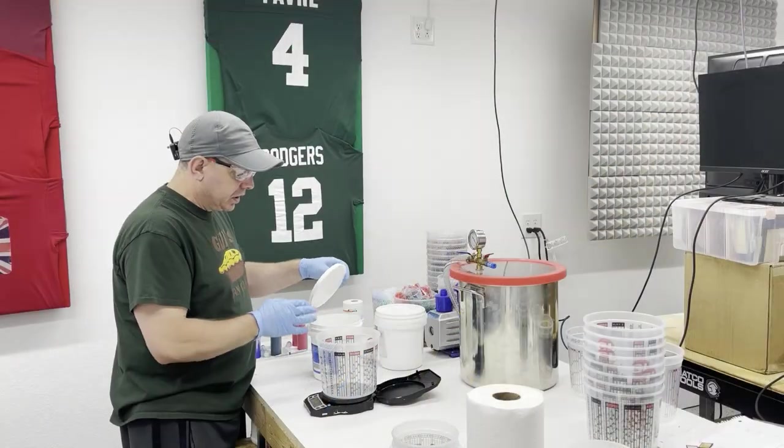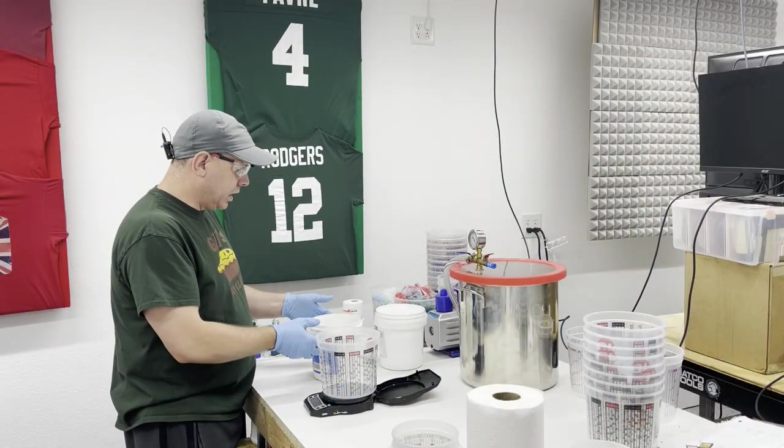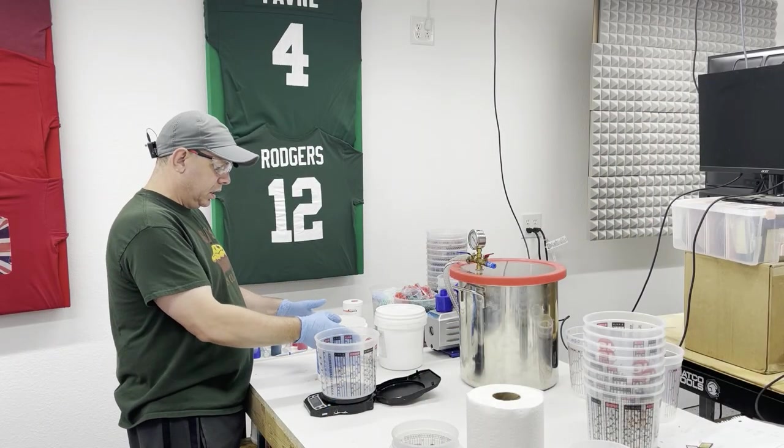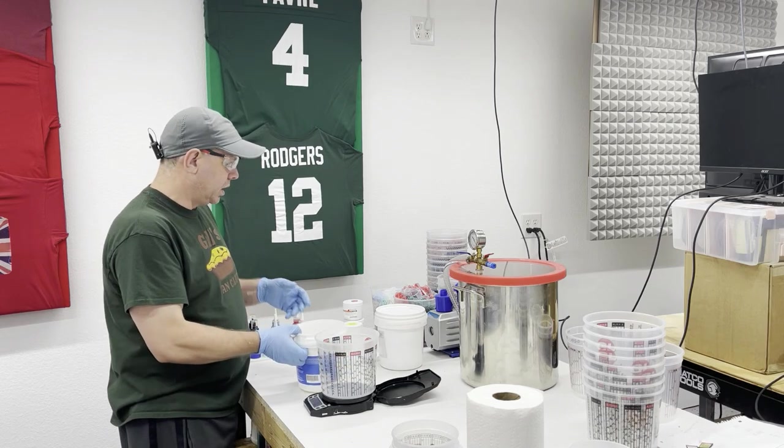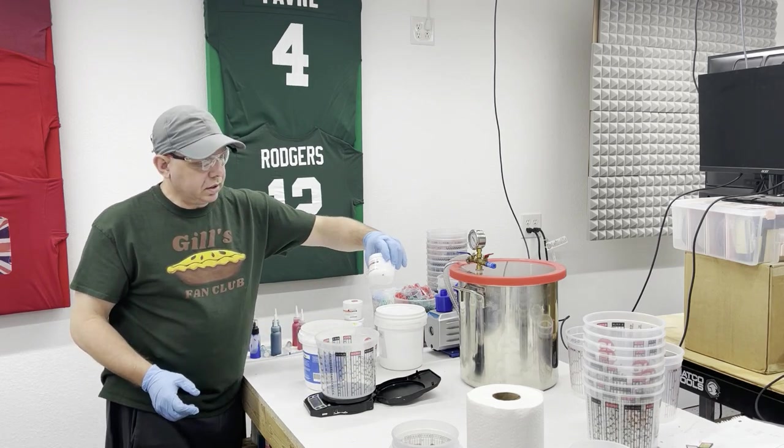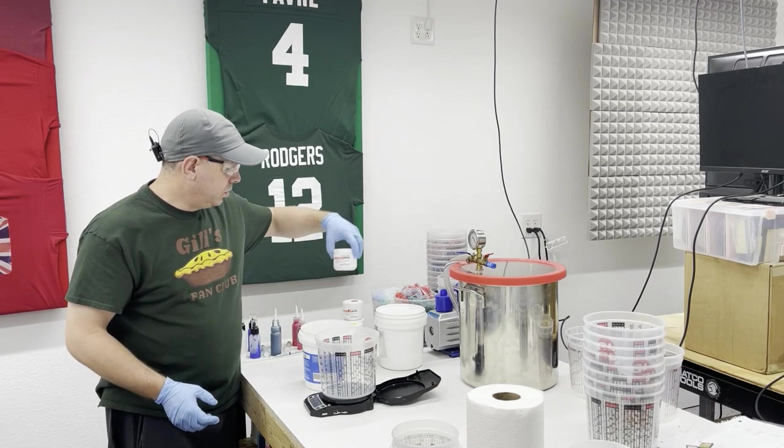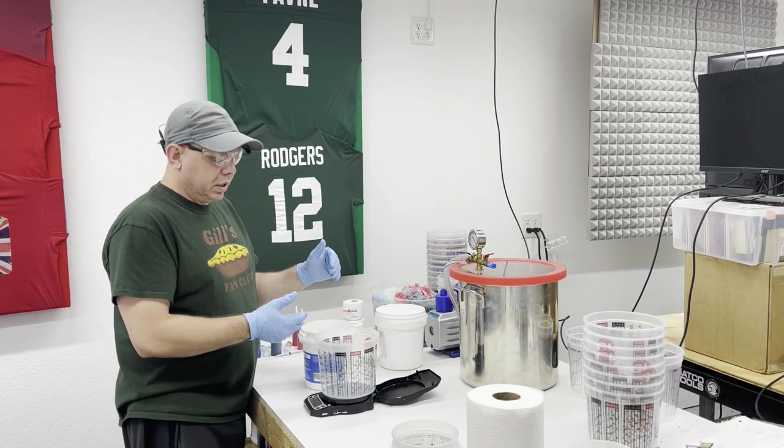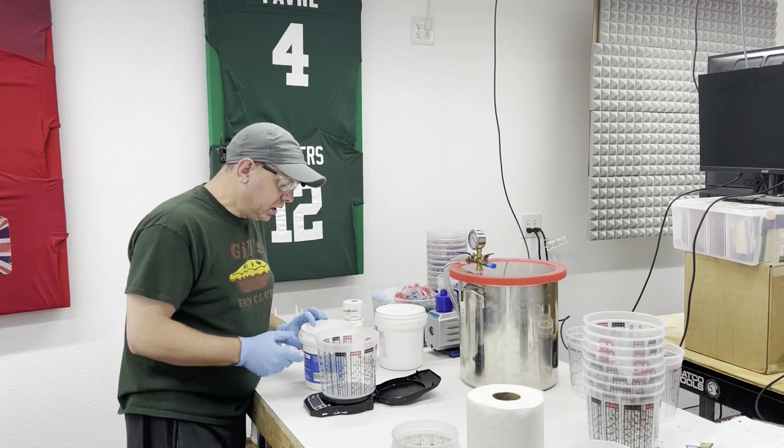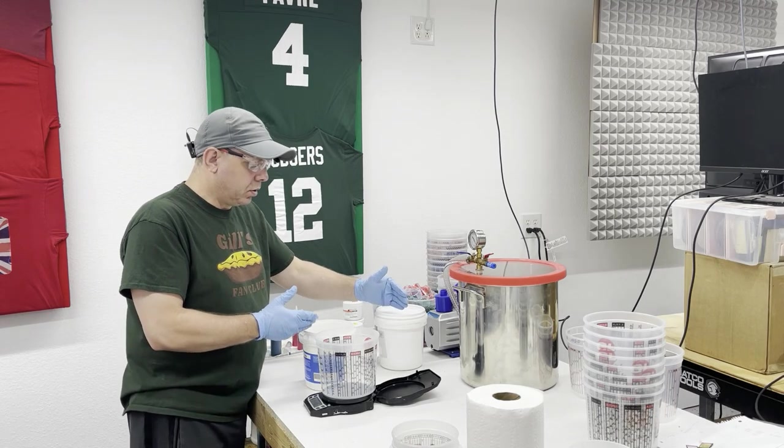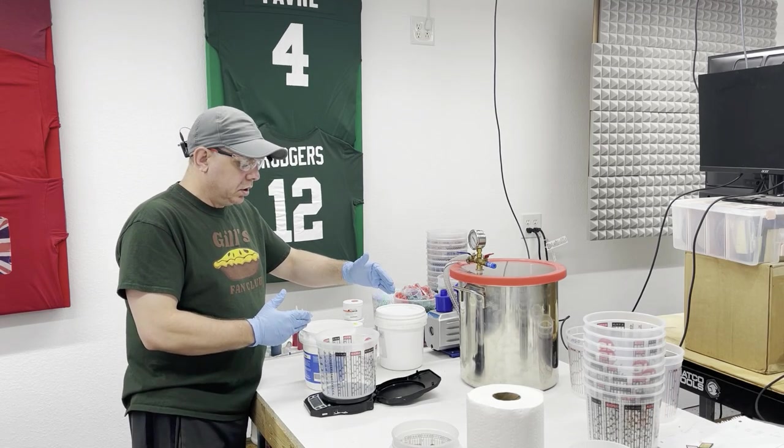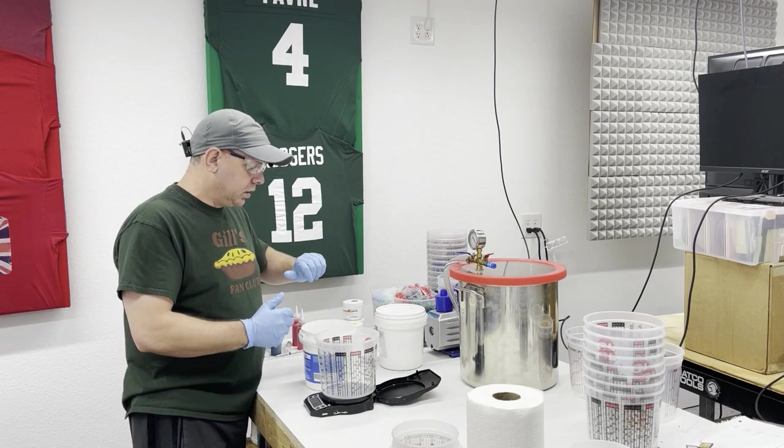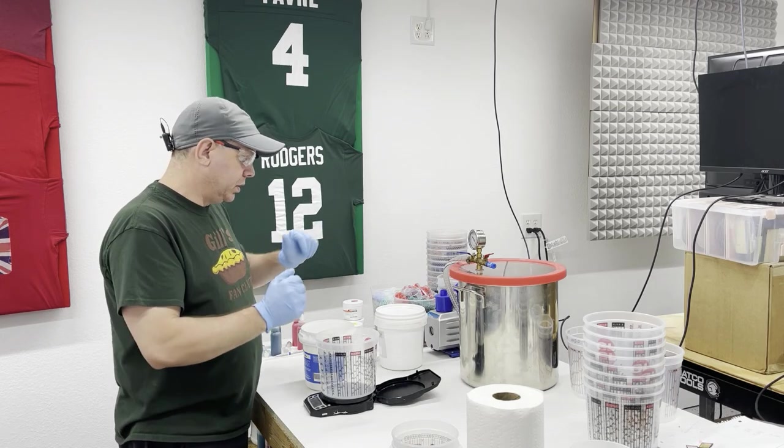Once again, this is Alumilite Plat 25 silicone. It's clear so we can color it. I always have these colors from Alumilite—it doesn't take very much. I'll show you that when we get there. I only want to go about half with this, so it's one to one by weight or volume. I'm just going to go ahead and get this done. I'll come back when it's time to put some color in it and degas it.